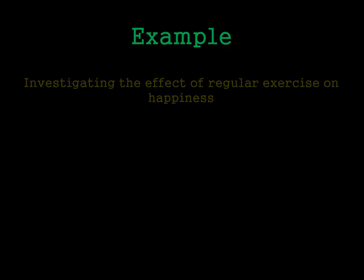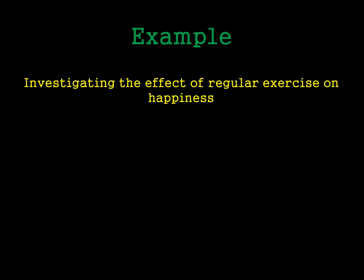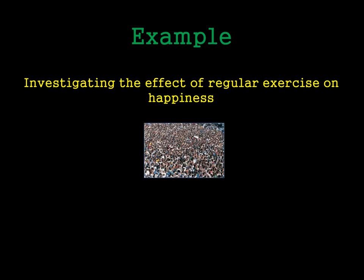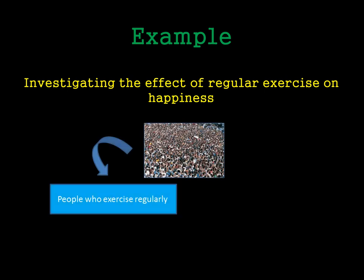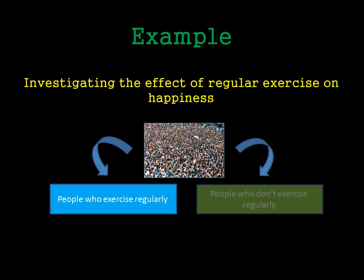Let's work through an example. Imagine a group of researchers want to investigate the effect of regular exercise on happiness. They get a large group of people and divide them into two groups — one group are the people that exercise regularly and one group are the people who don't exercise regularly. They then measure everyone's happiness and see if the happiness levels are different between the two groups.